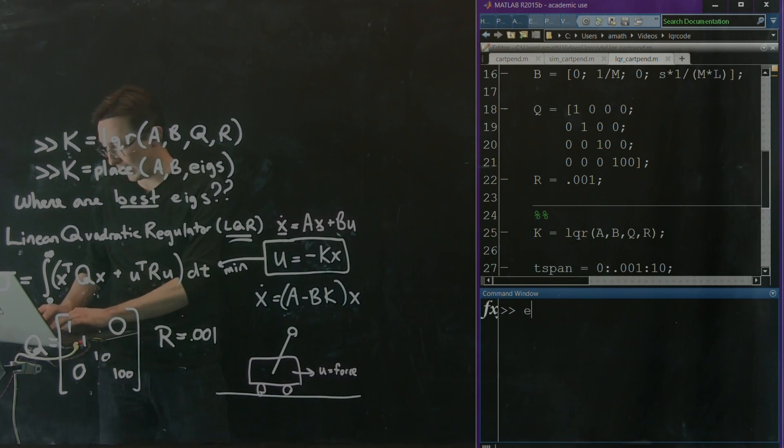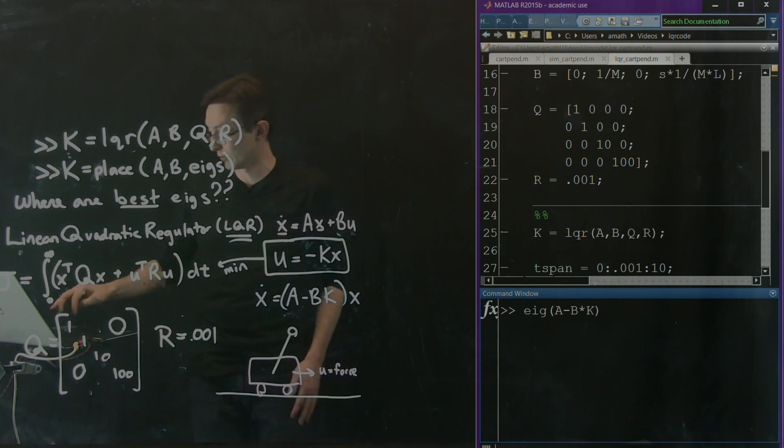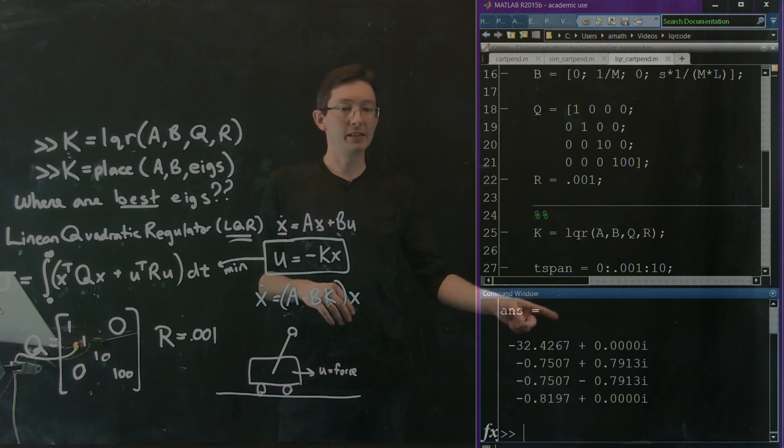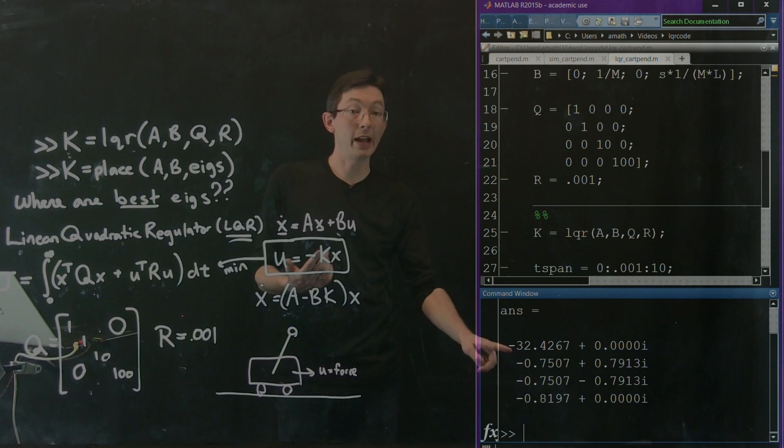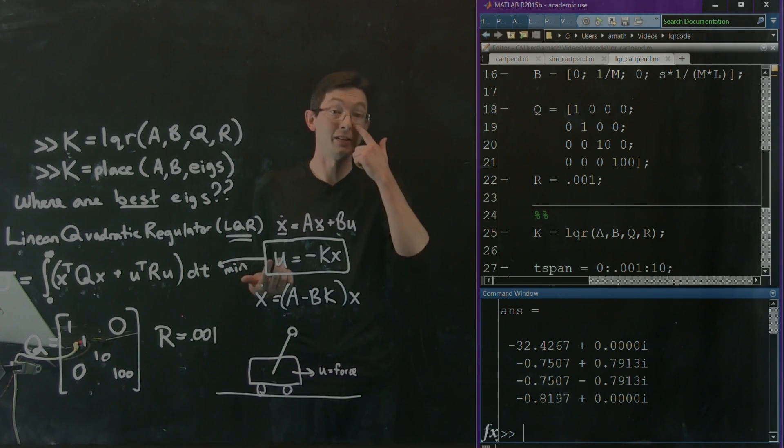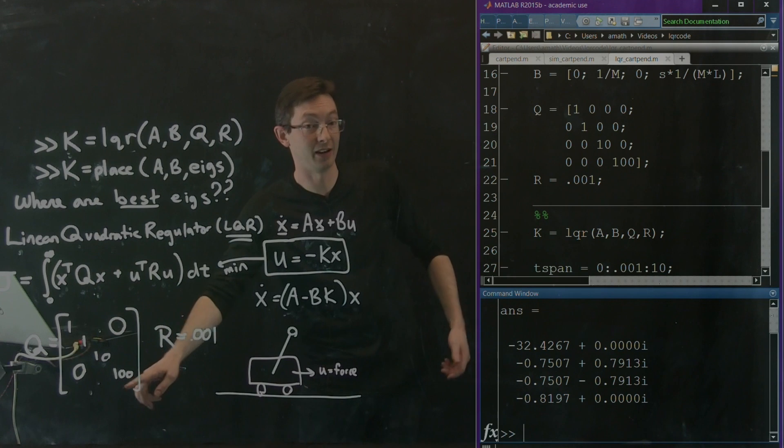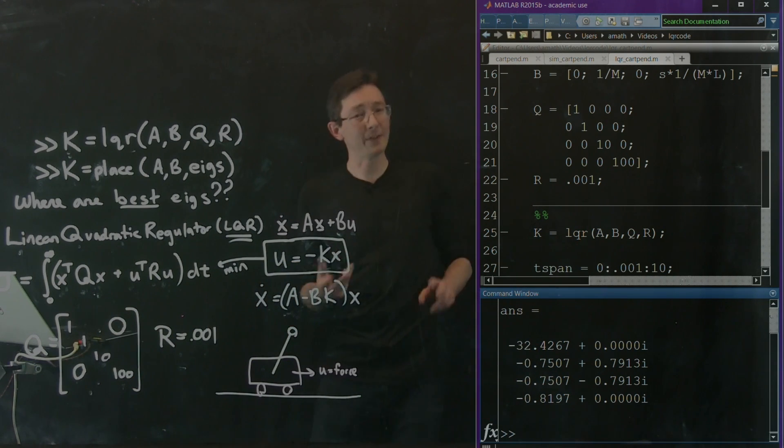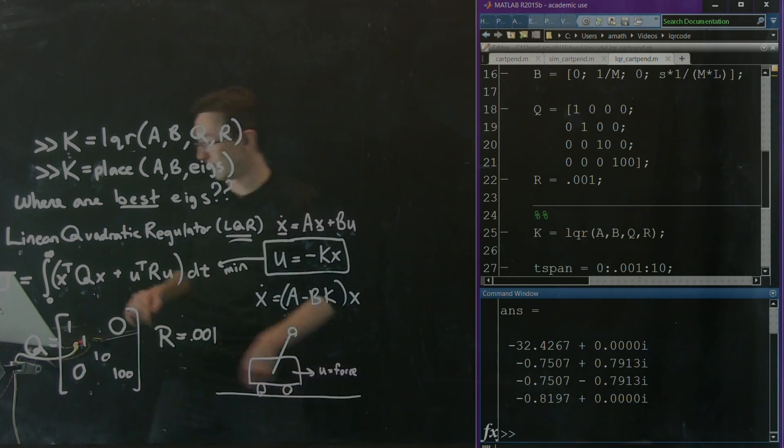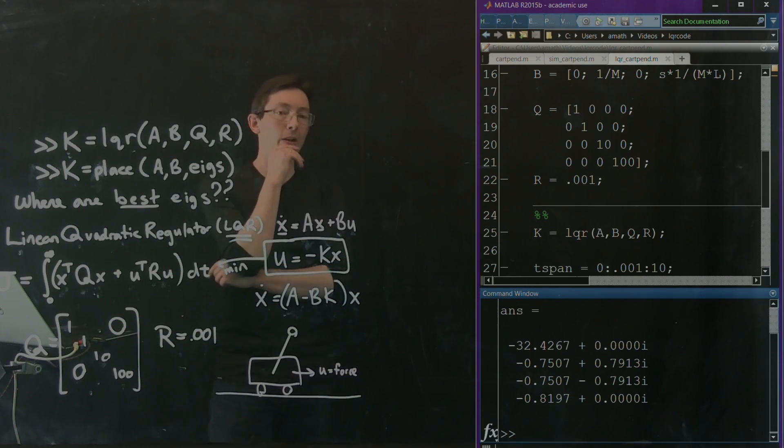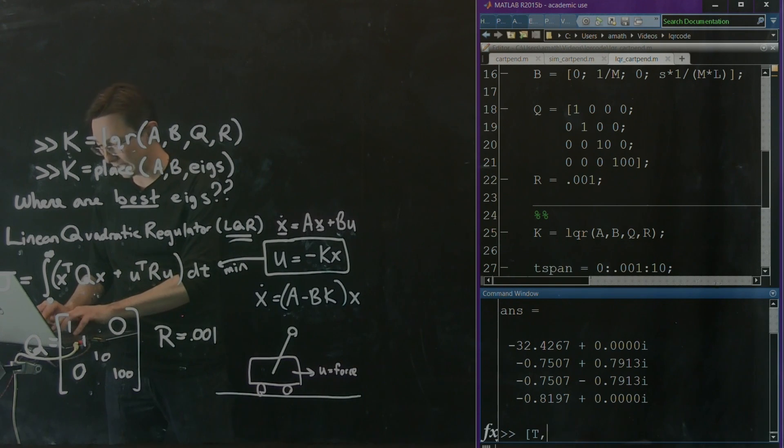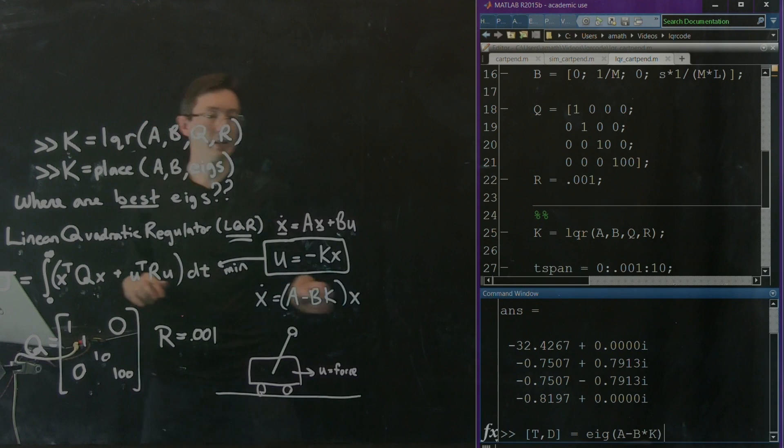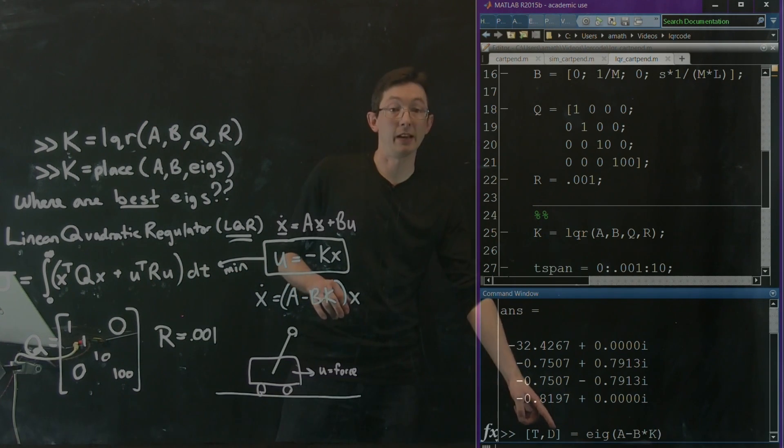And in fact, I could compute the eigs of A minus BK and see where LQR chose to place them. And so interestingly, it takes one eigenvalue and makes it really aggressive. Probably theta dot. And then the other ones are not so aggressive. And if I wanted to probe this, I actually could. I would look at T comma D equals eig of A minus BK. So I get my eigenvectors and eigenvalues.